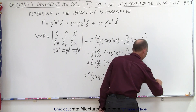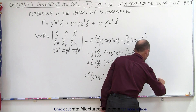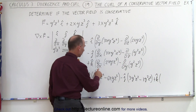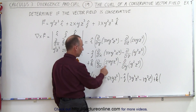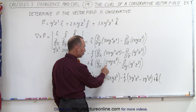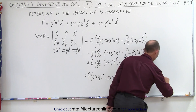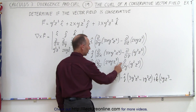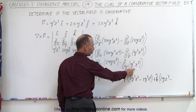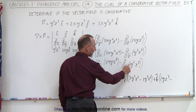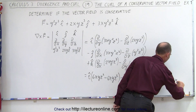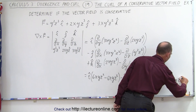Then we have the k component. Taking the partial of 2xyz³ with respect to x gives 2yz³, and subtracting the partial with respect to y of y²z³ gives 2yz³. These cancel as well.